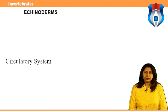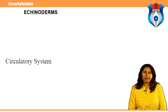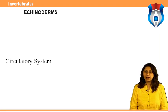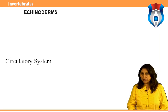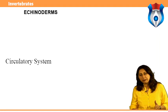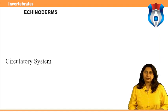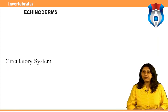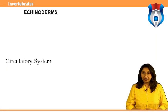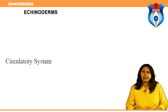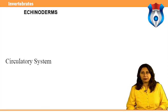Circulatory system: echinoderms have a network of fluid-filled canals that function in gas exchange, feeding, and movement. The network contains a central ring and tube feet that stretch along the body or arms; these tube feet poke through holes in the skeleton and can be extended or contracted. Echinoderms do not have a true heart, and their blood often lacks any respiratory pigment like hemoglobin.